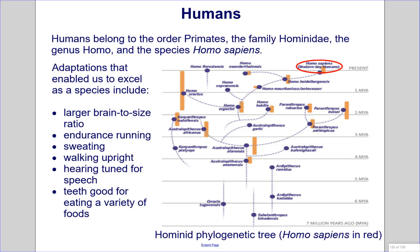Humans belong to the order Primates, the family Hominidae, the genus Homo, and the species Homo sapiens. Adaptations that enable us to excel as a species include a larger brain-to-body-size ratio, endurance running, sweating, walking upright, hearing tuned for speech, and teeth suited for eating a variety of foods. Pictured here is a hominid phylogenetic tree with Homo sapiens shown in red.